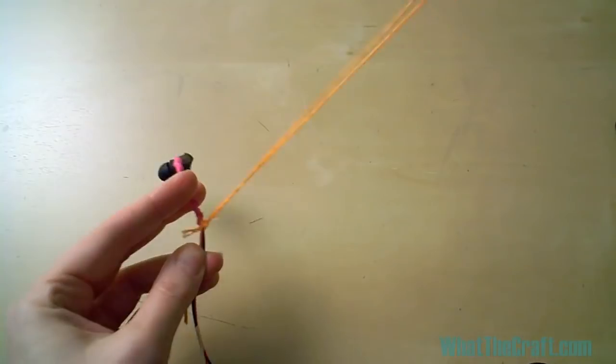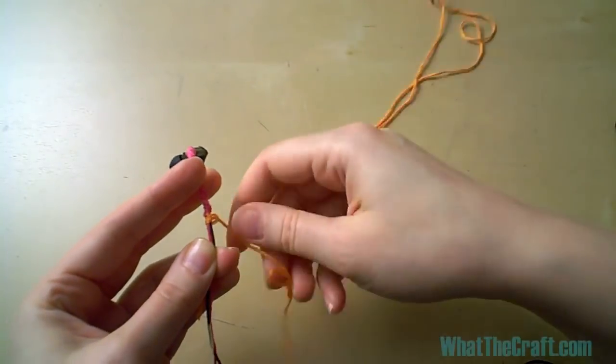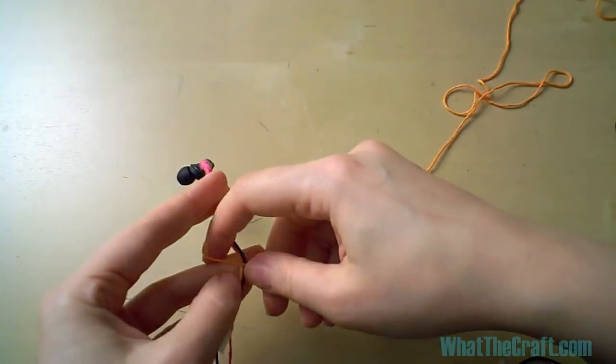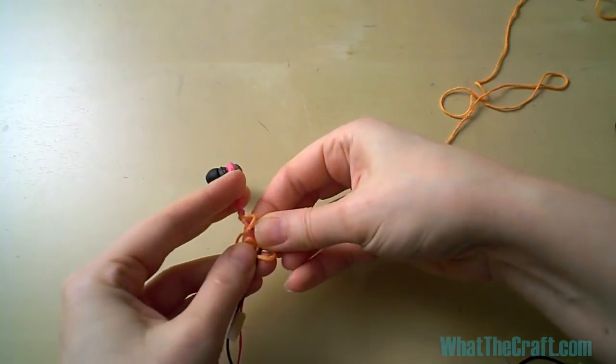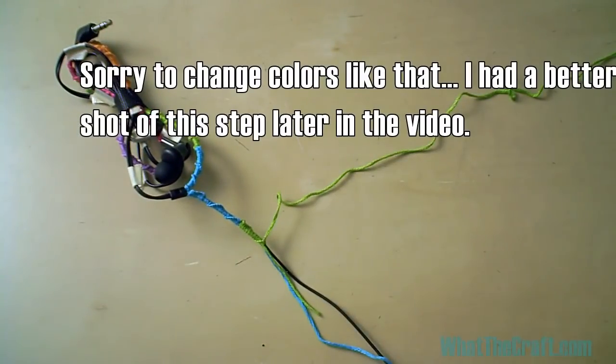Knot, knot, knot again until you get maybe half an inch or so. And then you can trim the thread tails. I find them to be kind of a pain if I don't trim them.